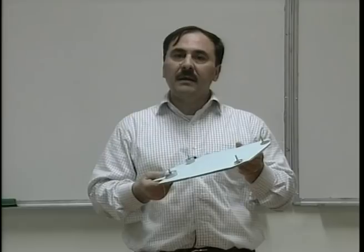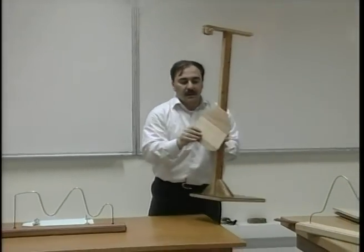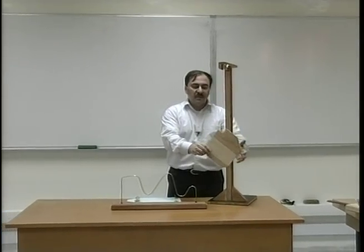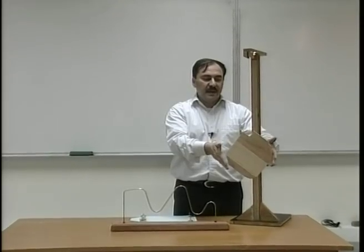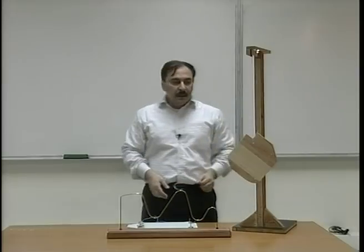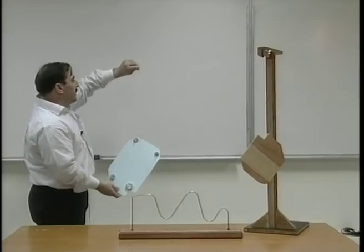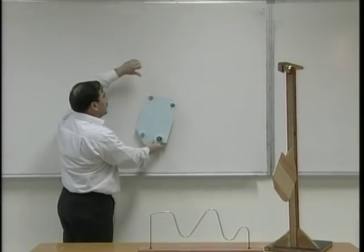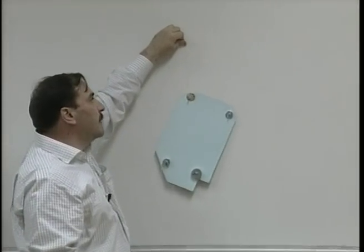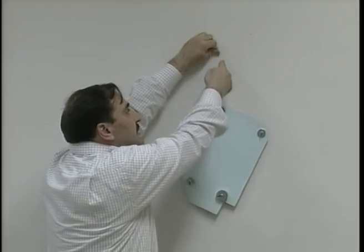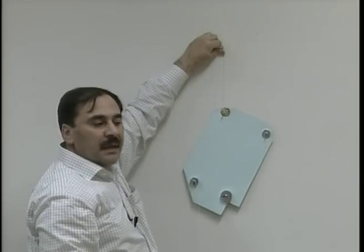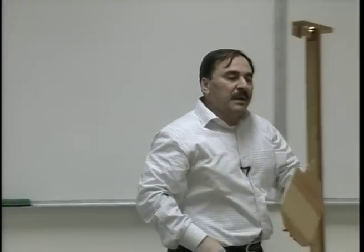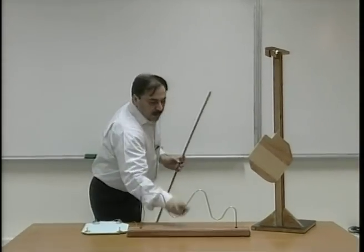To determine the center of gravity, there is a simple practical way: we hang this body freely from several points like a pendulum — a cord with a heavy weight hanging from its end. We hang the piece from a particular point; when it is completely stable along the cord, we draw a line on the piece aligned with the extension of the cord. To make the process easy, I draw a line on the board using the ruler to help determine the center of gravity.